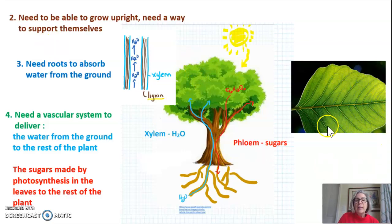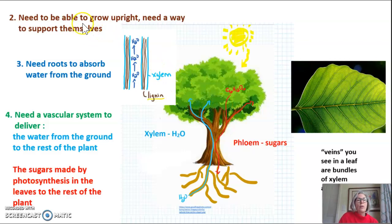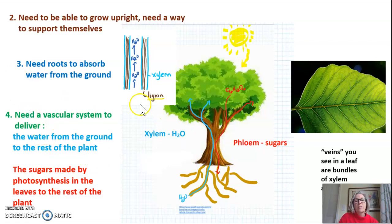If you look at the leaves of the plant, the veins you see are actually bundles of xylem and phloem together. But the xylem in the trunk of the plant with lignin in it is what allows plants to stand upright. So in order to stand upright, they need xylem with lignin, they need roots to transport the water that comes in through the roots and goes up through the xylem, and of course the second part of the vascular system — the phloem — which allows sugars to be transported around the plant.